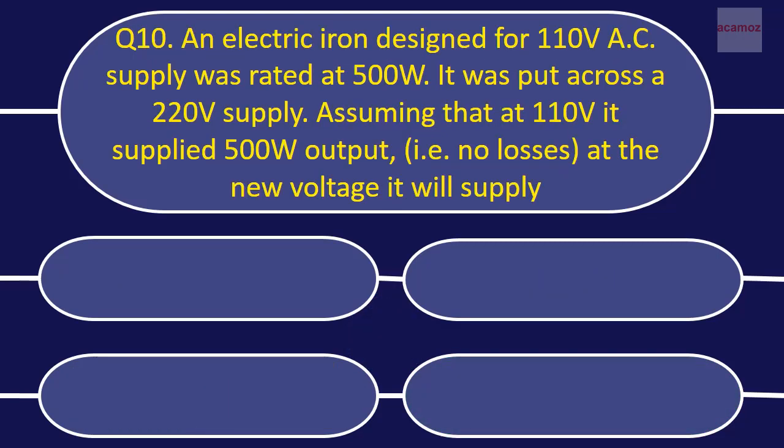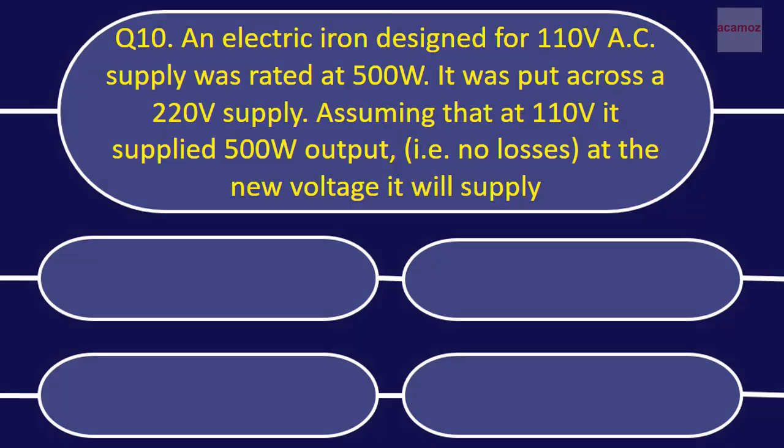Question 9: An electric iron designed for 110V AC supply was rated as 500W. It was put across a 220V supply. Assuming that at 110V it supplies 500W output, at the new voltage it will supply?